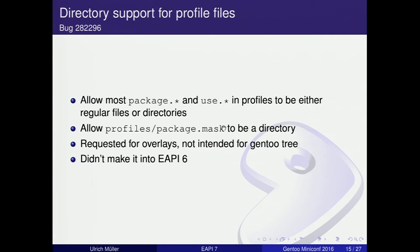This was already proposed last time: most package and use files in profiles should support directories, and package.mask in profiles should also have directory support. This is not intended to be used in the Gentoo main tree but mainly for overlays. It didn't make it into the last eAPI because of some technicalities, but this time we should be ready.